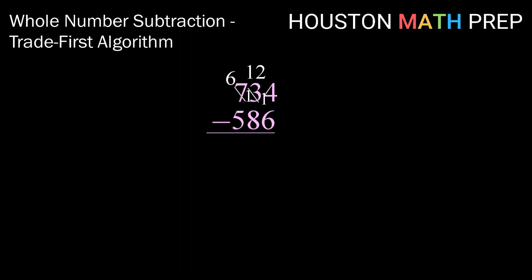So now, we've made all of our trades up front, and we're ready to just do each column subtraction. So starting with our ones digit, 14 minus 6 makes 8, 12 minus 8 makes 4, and 6 minus 5 makes 1. So with our trades first algorithm, we have our answer, 148.